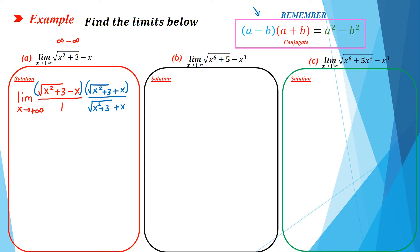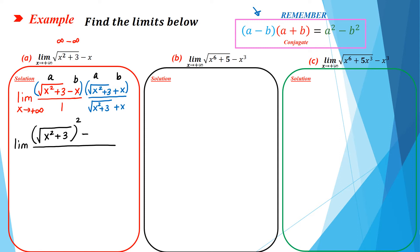Now you have to multiply the quantity in the numerator by its conjugate. As you know, you have to use the difference of two squares because a minus b times a plus b equals a squared minus b squared. So a is square root of x squared plus three and b is x. So we can simplify the numerator as square root of x squared plus three, all squared, minus x squared, divided by the conjugate, square root of x squared plus three plus x, when x goes to positive infinity.